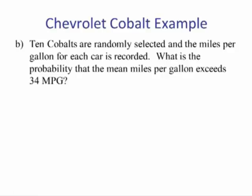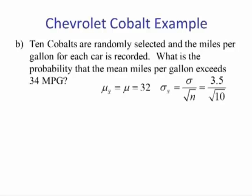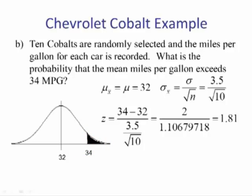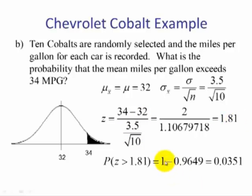Part B: 10 Cobalts are randomly selected and the miles per gallon for each car is recorded. What is the probability that the mean miles per gallon exceeds 34 miles per gallon? Now we're looking at the distribution of the sample means for a sample of 10. The mean of the sample means equals the population mean, 32. The standard error is 3.5 divided by the square root of 10. We change 34 to a z-score by taking x-bar minus the mean divided by the standard error, and we get 1.81. Using table 5, we do 1 minus 0.9649, and we end up with 0.0351.